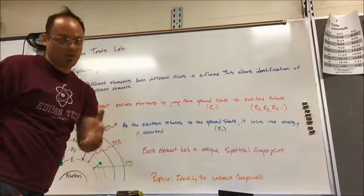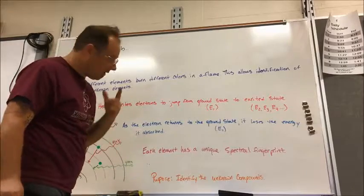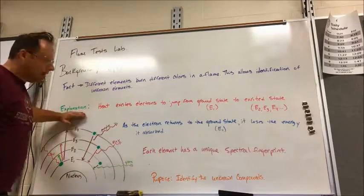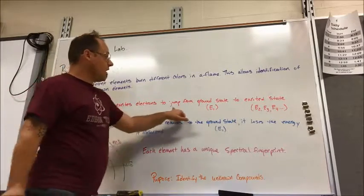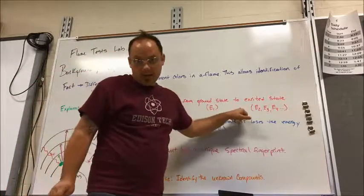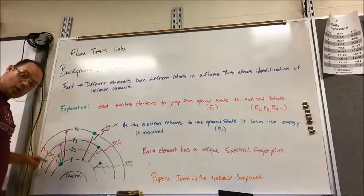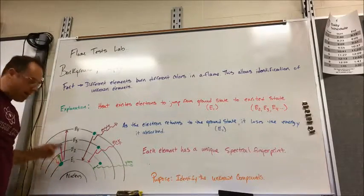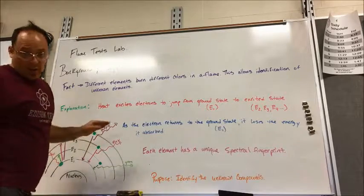Explanation: heat or in this case electricity excites electrons to jump from a ground state to an excited state. This is what it looks like - an electron likes to be close to the nucleus, but when it gets zapped with heat or electricity, boom, it could jump to anywhere up above. It doesn't stay there long.